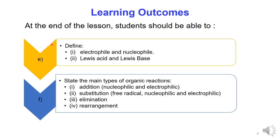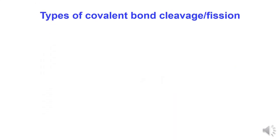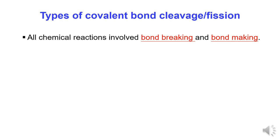Learning Outcomes E: Define (1) electrophile and nucleophile, and (2) Lewis Acid and Lewis Base. Learning Outcomes F: State the main types of organic reactions — (1) addition reactions, including nucleophilic additions and electrophilic additions, (2) substitution reactions, (3) elimination, and (4) rearrangement.